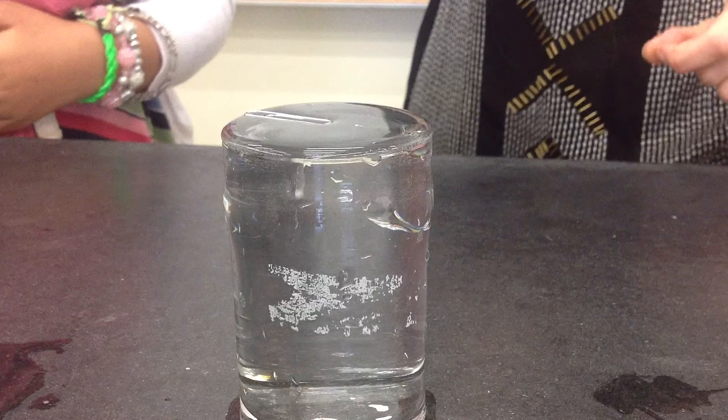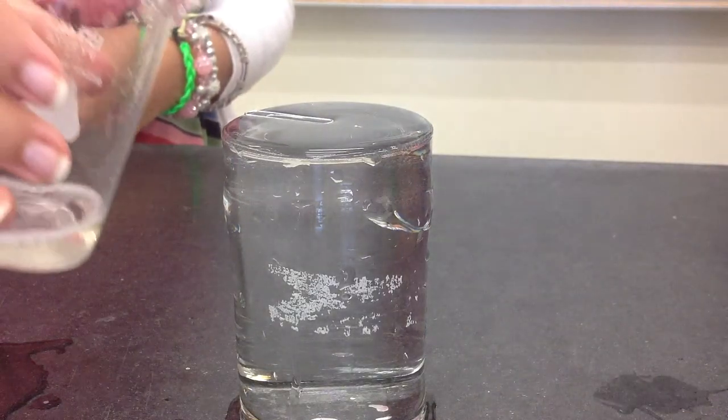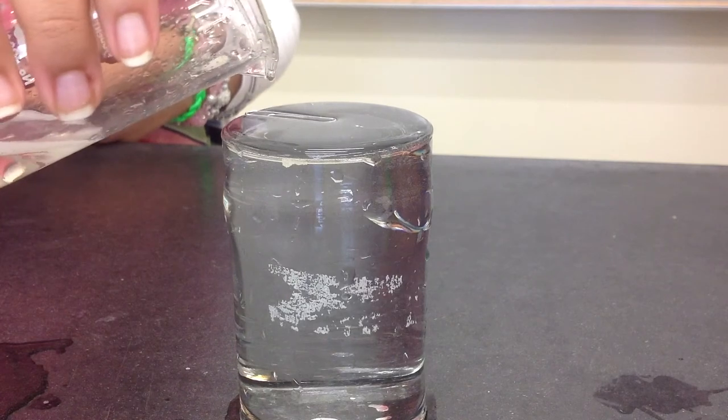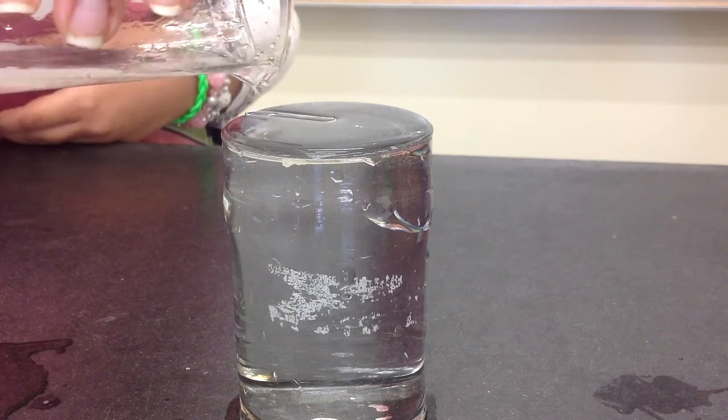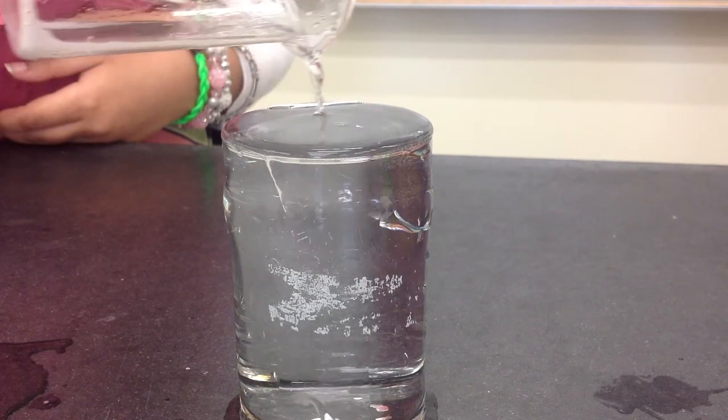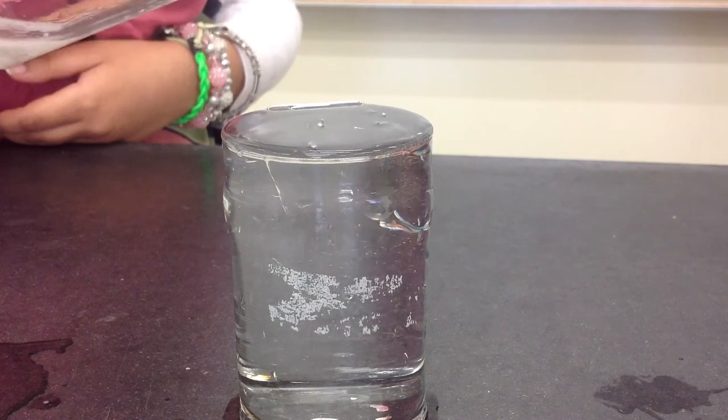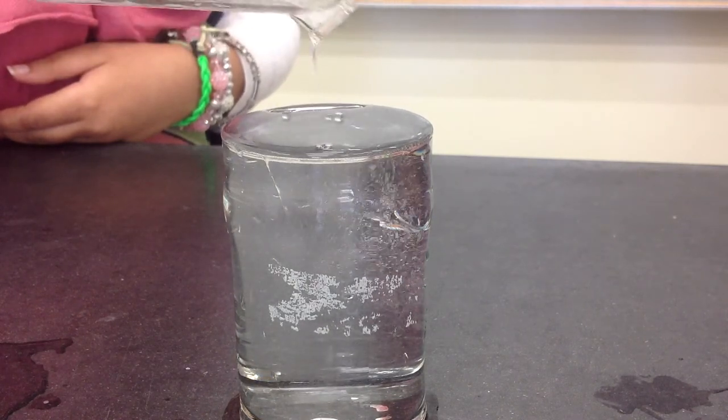Now watch what happens when we add a detergent solution. This detergent is both polar and nonpolar, and thus it ruptures the intermolecular forces between the water molecules, breaking the membrane. As a result, the paper clip falls.